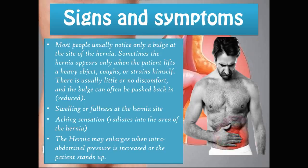What are some signs and symptoms of abdominal hernias? Most people usually notice only a bulge at the site of the hernia. Sometimes a hernia appears only when the patient lifts a heavy object, coughs, or strains. There is usually little or no discomfort and the bulge can often be pushed back in, meaning the hernia can be reduced. The patient can also experience swelling or fullness at the hernia site, an aching sensation radiating into the area, and the hernia may enlarge when intra-abdominal pressure is increased or the patient stands up.